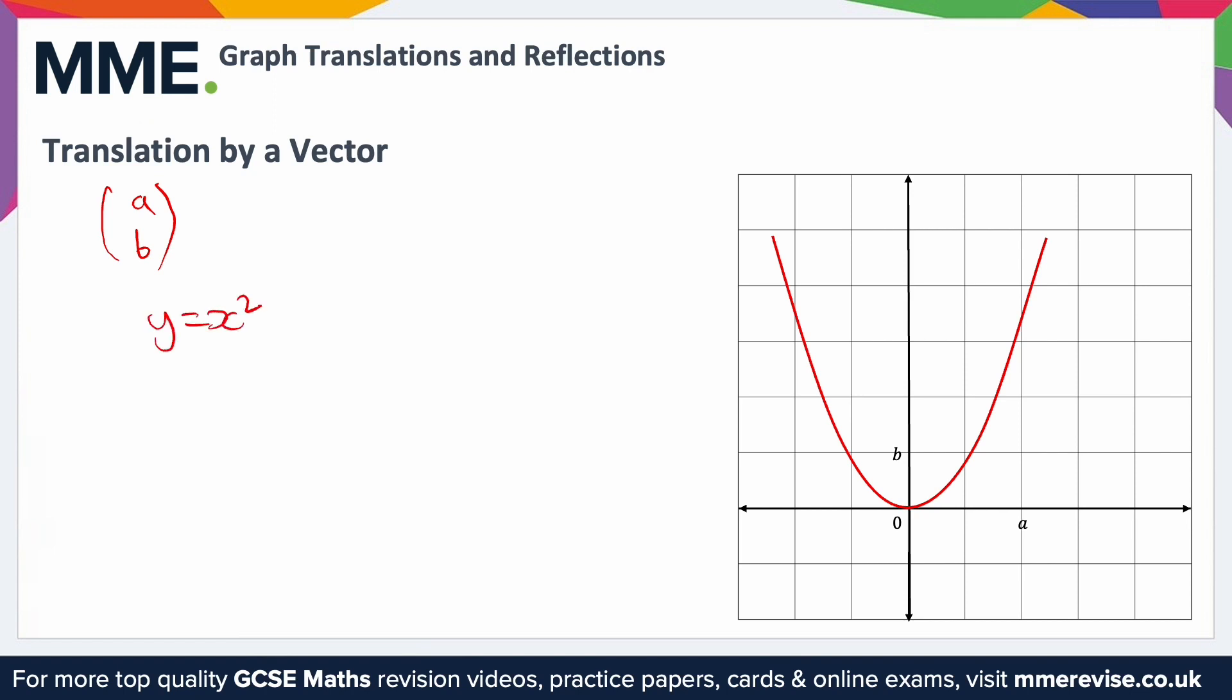We need to first deal with the a, which is a horizontal translation, so that must mean we need to do this: y equals x minus a squared. And then we need to deal with the vertical translation, so we need to add b onto this. Again, just pick a point on the graph. I'm going to pick this point here that goes through the origin. We want to move it right by a units so that gets it to there, and then move it up by b units so that gets it to there. From there, you can just redraw the graph making sure that same point goes through that point now, like that. So this graph is what we had here.